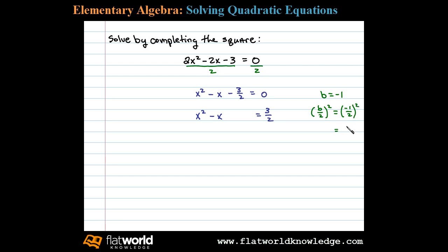Well that equals 1 fourth, so the value that completes the square is 1 fourth. We'll add 1 fourth to both sides. Now factoring the left side, we see x² factors as x times x, 1 fourth factors as 1 half times 1 half.